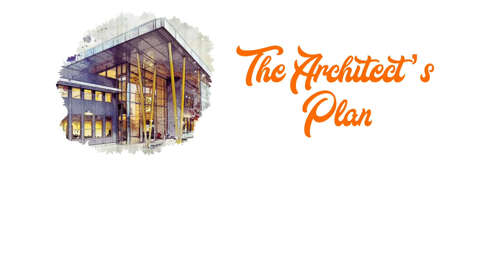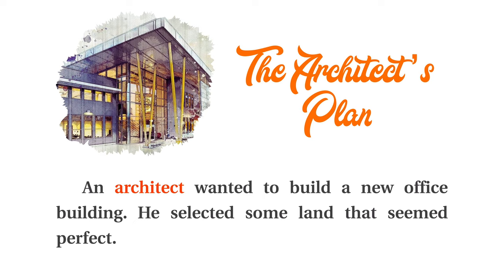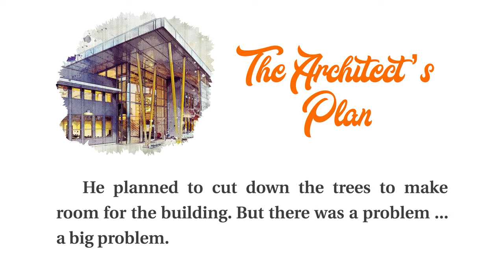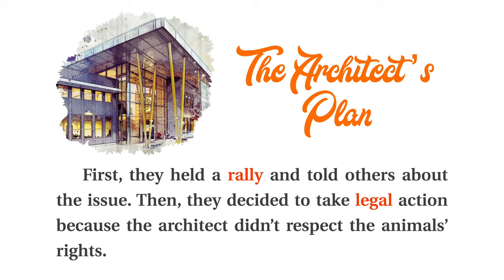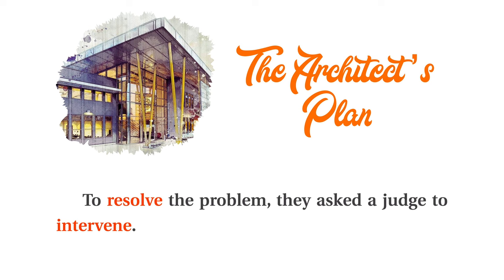The Architect's Plan. An architect wanted to build a new office building. He selected some land that seemed perfect. He planned to cut down the trees to make room for the building. But there was a problem. The land was actually the habitat of several types of birds. Some nature lovers were very upset with the architect. First, they held a rally and told others about the issue. Then they decided to take legal action because the architect didn't respect the animals' rights. To resolve the problem, they asked a judge to intervene.